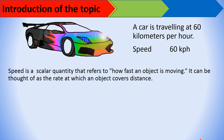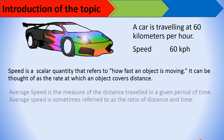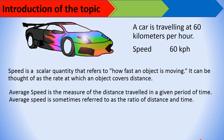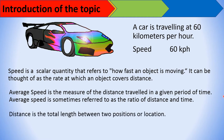Speed can be thought of as the rate at which an object covers distance. Average speed is the measure of the distance traveled in a given period of time — it's the ratio of distance to time. The formula for finding speed and average speed is the same. Distance is the total length between two positions or locations.